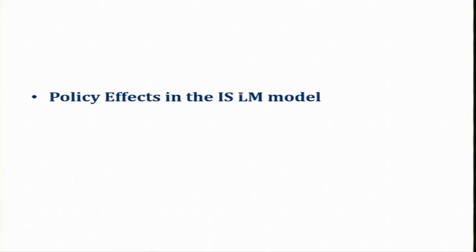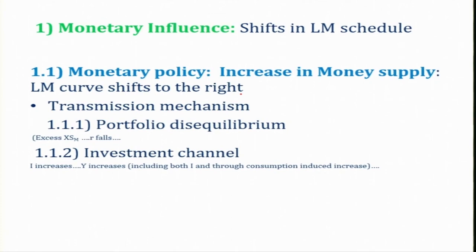Let us now continue our discussion on policy effects. For example, what is the effect of an increase in monetary policy — expansionary monetary policy — on income using the IS-LM model? And similarly, what is the effect of fiscal policy on income using the IS-LM model? Starting with monetary policy, let us assume there is an increase in money supply — the central bank is following an expansionary monetary policy. When expansionary monetary policy is initiated and money supply increases, the LM curve will be shifting to the right. The transmission mechanism — how does it affect rate of interest and income?